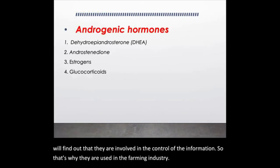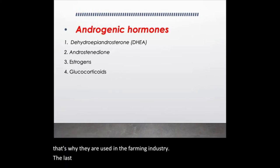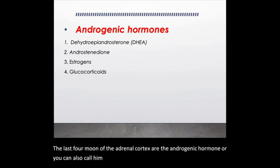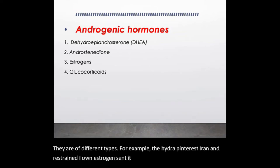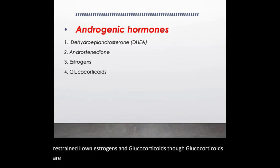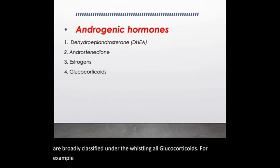The last hormones of the adrenal cortex are the androgenic hormones, which you can also call sex hormones. They are of different types, for example dehydroepiandrosterone, androstenedione, estrogens, and glucocorticoids. Though glucocorticoids are broadly classified under their own category, for example cortisol and cortisone, they also have androgenic activity.